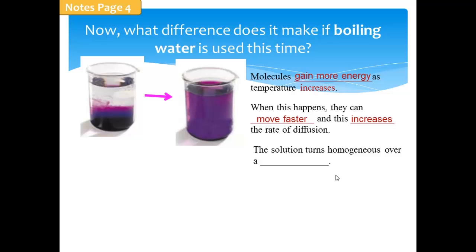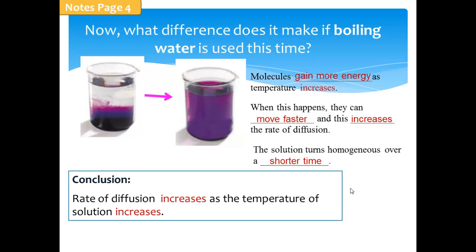And hence, the solution will turn homogeneous over a shorter time. This is what was shown in the video when we compared 0 degree Celsius with 20 degree Celsius and 70 degree Celsius. And hence, we can conclude that the rate of diffusion increases as the temperature of solution increases.